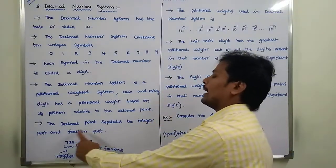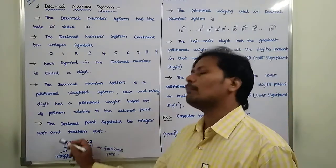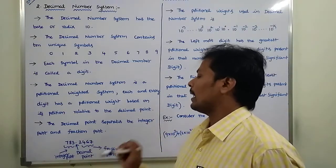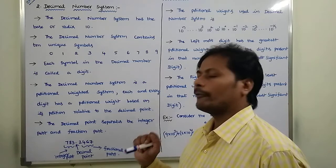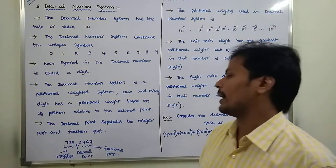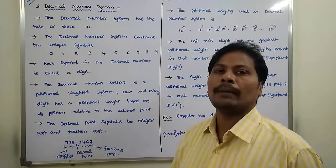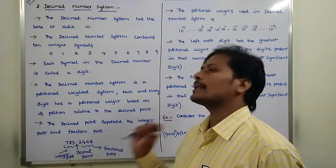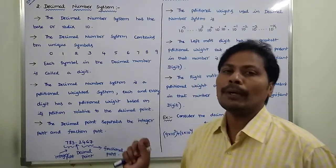Suppose we take this decimal number. This decimal number consists of the symbols 7, 8, 3, 2, 4, 6, 7. We can observe that this decimal number consists of the independent symbols 0 through 9.